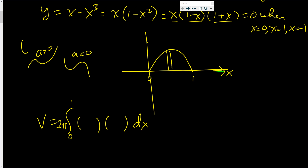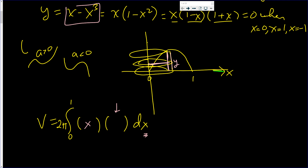We have 2π times r times h times dx. The radius — this piece is rotating around, so the radius is that distance, which is x. And the height — how tall is that piece? That piece is y. You can put y there temporarily, but you can only have x's, so the next line you substitute y = x − x³.